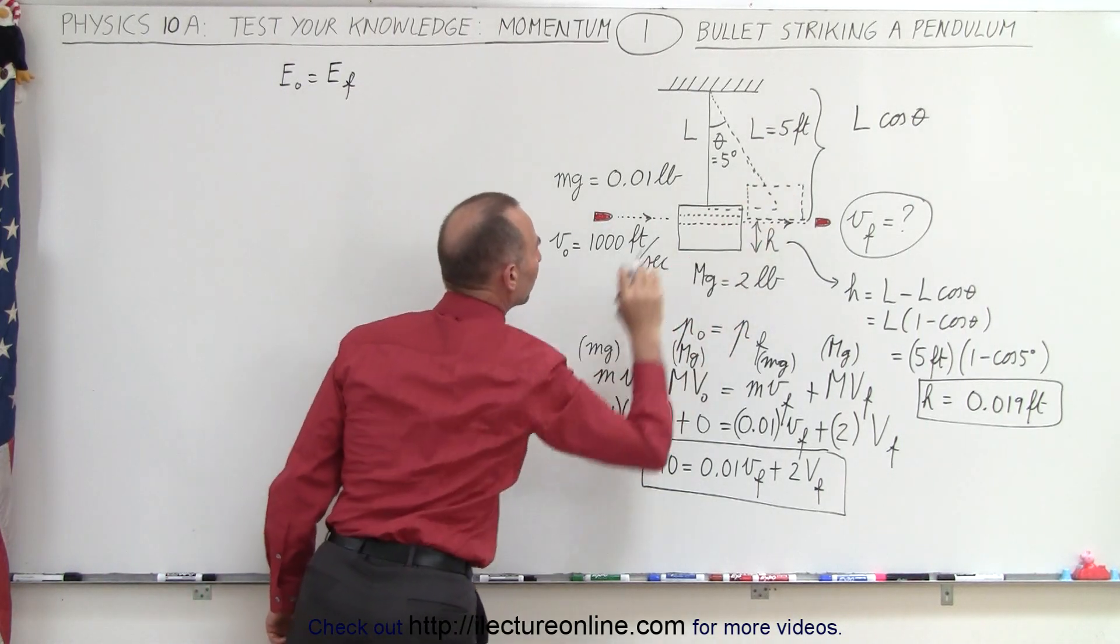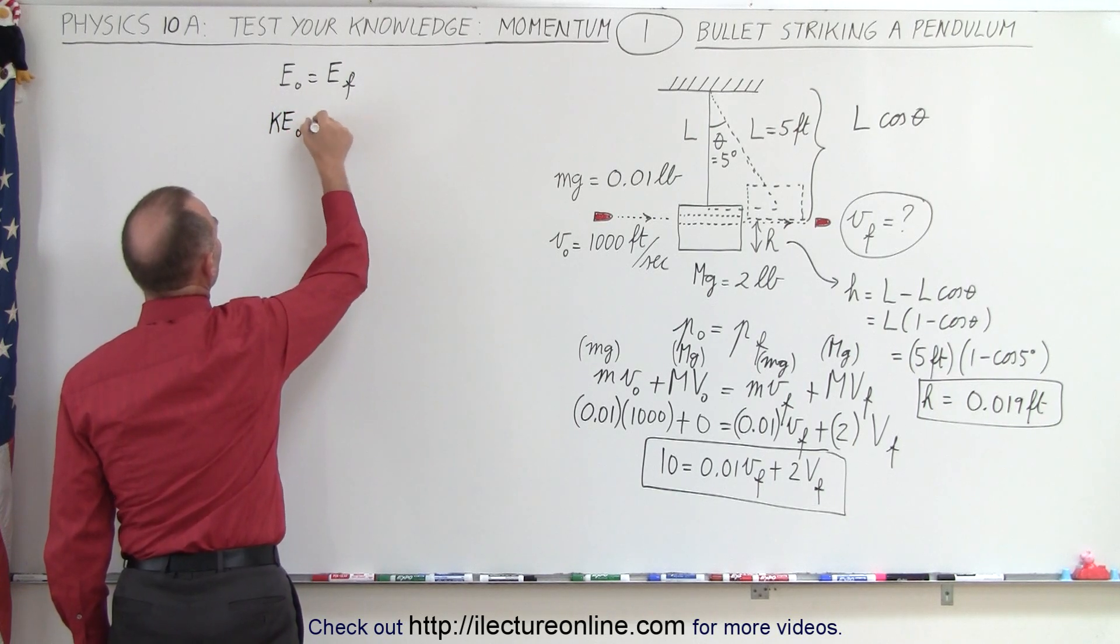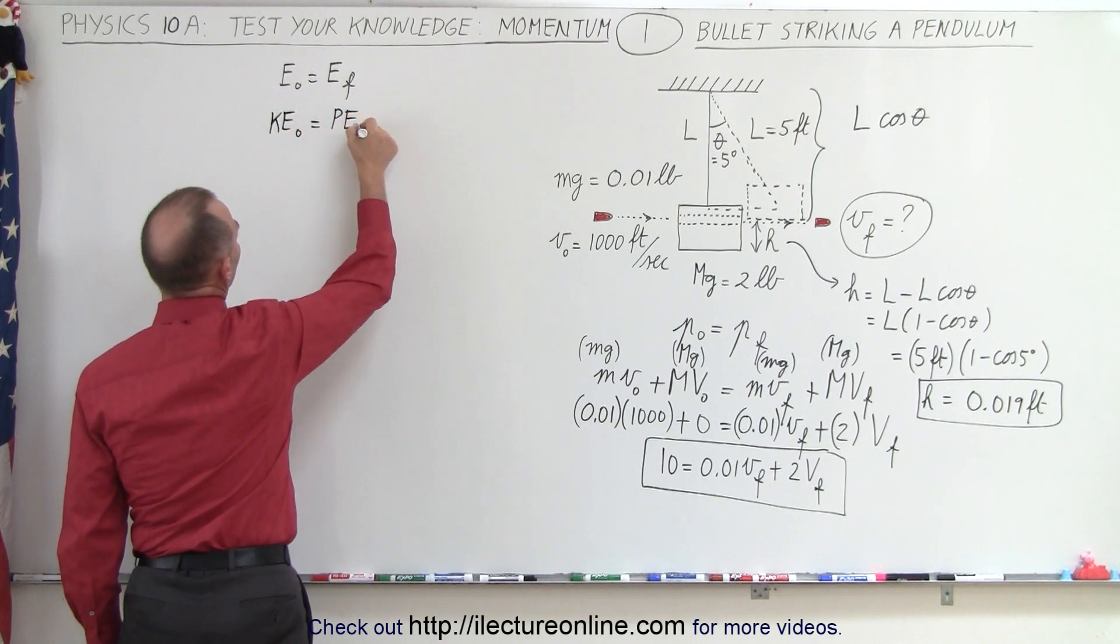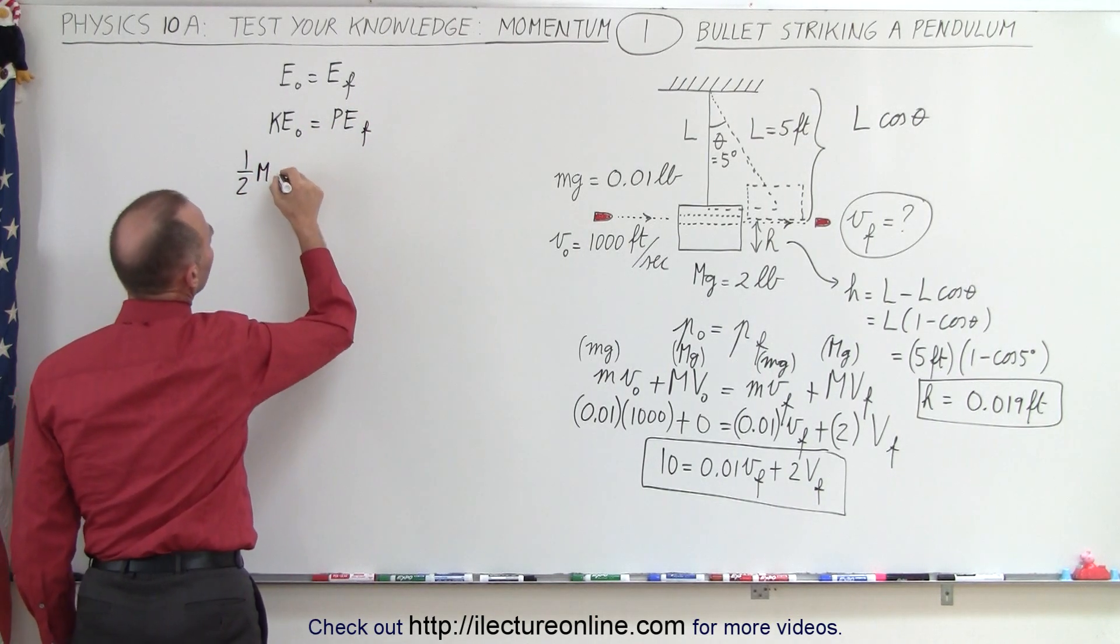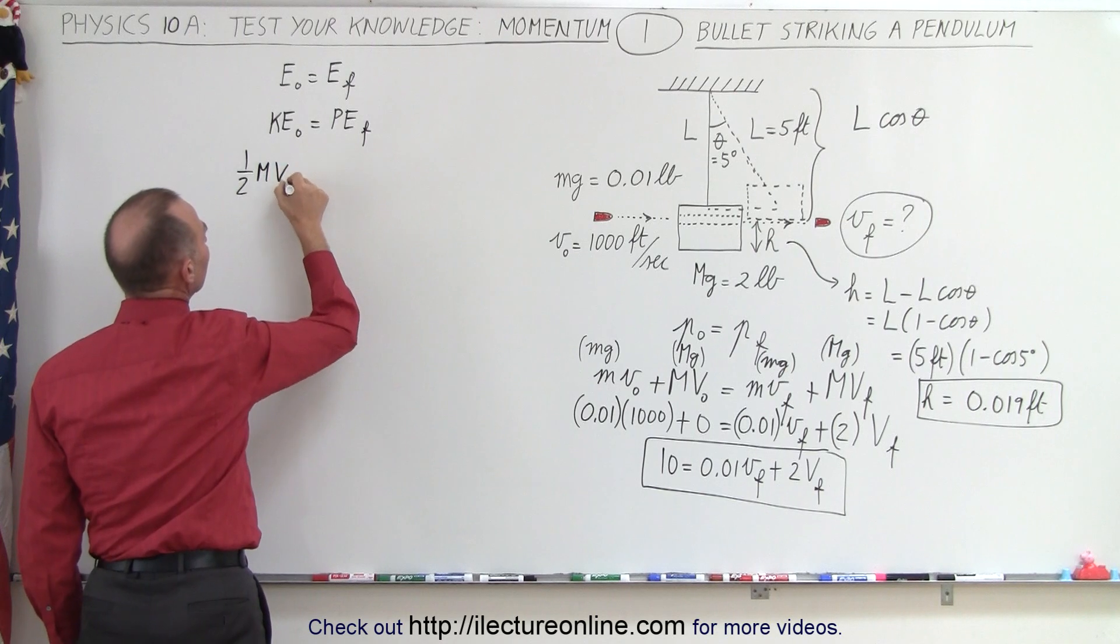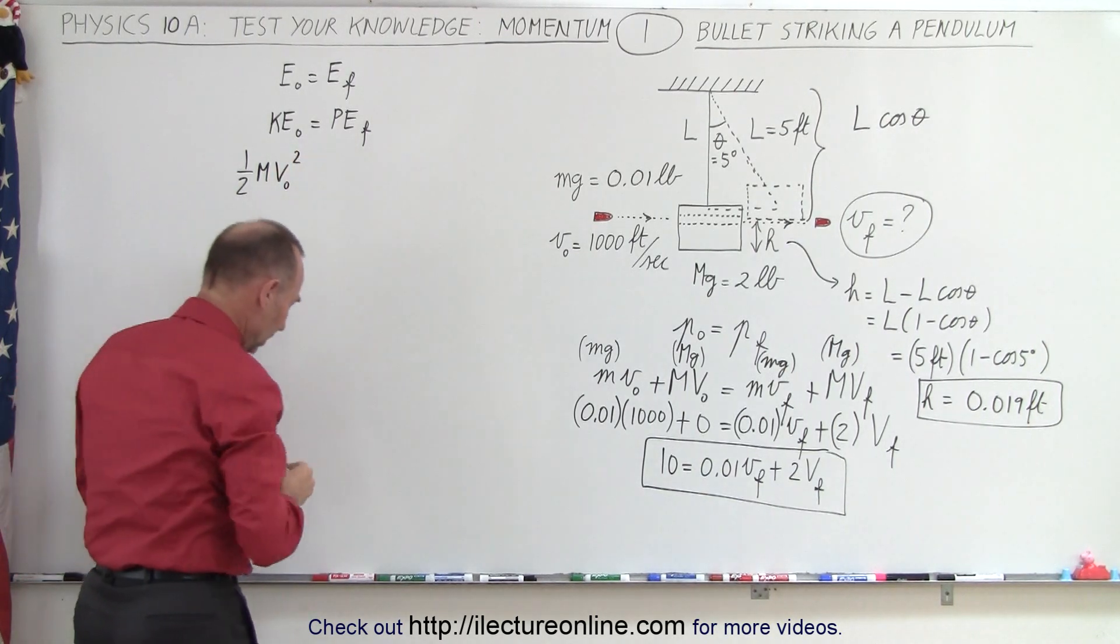In this case, we have the initial kinetic energy of the block which changes to potential energy final. So kinetic energy initial equals potential energy final. The kinetic energy initial would be one half m V initial squared.